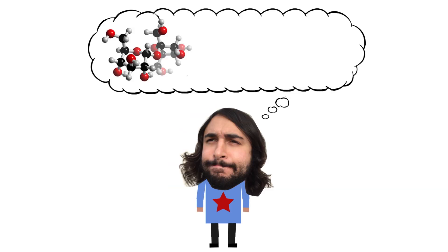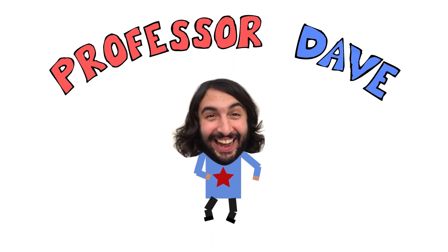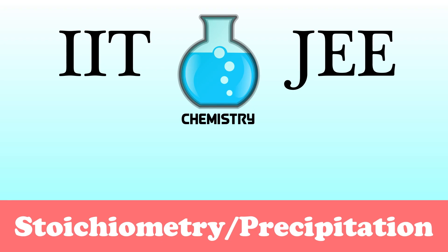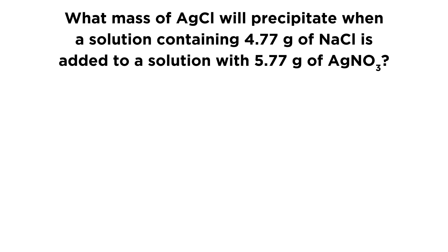He knows a lot about the science stuff — Professor Dave Explains. Today we're going to check out a problem that has to do with stoichiometry and precipitation. The question reads: what mass of silver chloride will precipitate when a solution containing 4.77 grams of sodium chloride is added to a solution with 5.77 grams of silver nitrate?